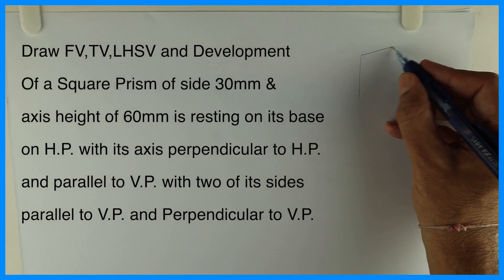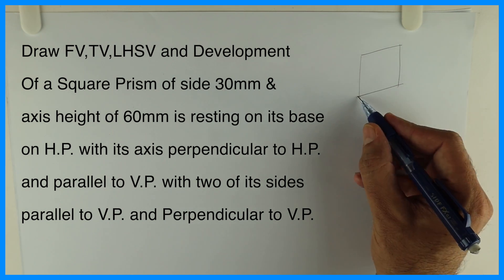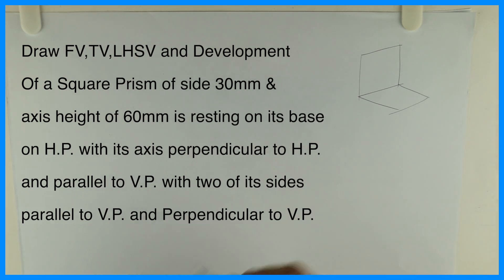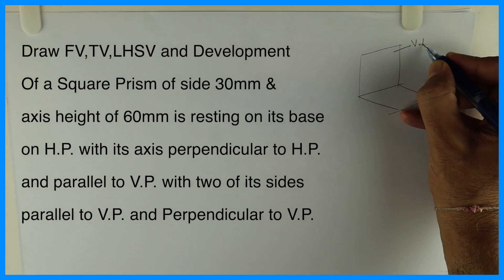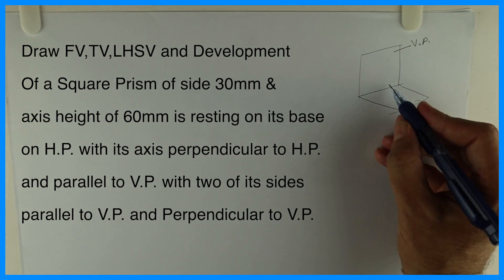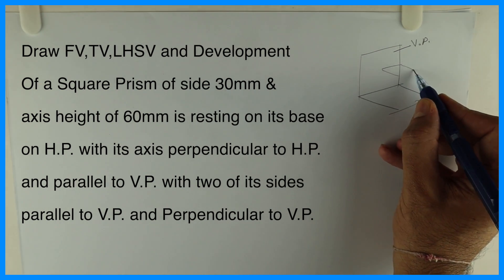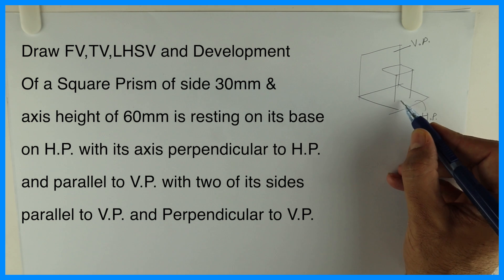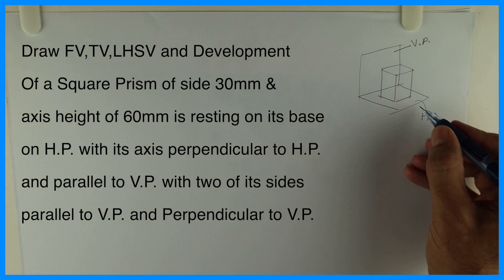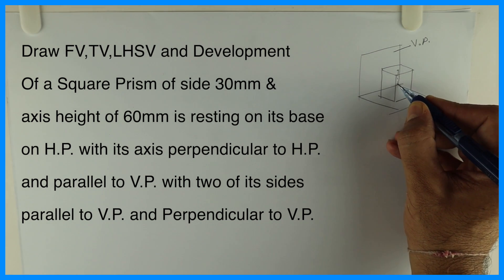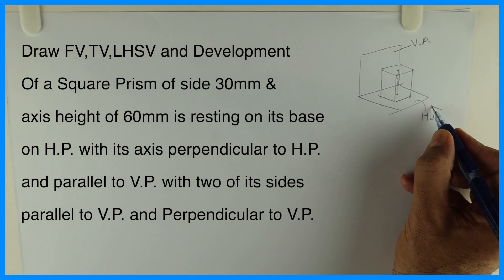See this, this is HP and VP I'm drawing and in this two sides of the base are parallel to VP and perpendicular to VP. This is HP, this is VP and I'm drawing a square prism. So square prism is standing like this, it is resting on HP, resting on its base on HP and axis perpendicular to HP like this.